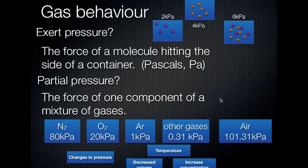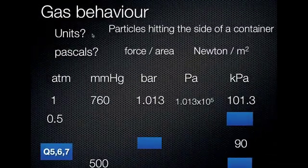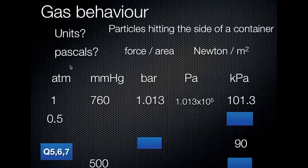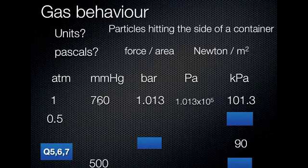How is pressure measured? The unit is pascals (Pa), which is newtons per square metre — force over area. Other units include atmospheres, where at ground level we have 1 atmosphere of pressure, and millimetres of mercury (mmHg), an older scale where atmospheric pressure pushes mercury up 760 mm in a tube.